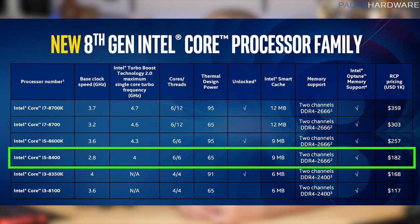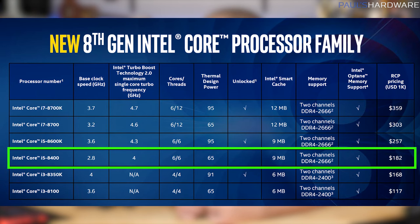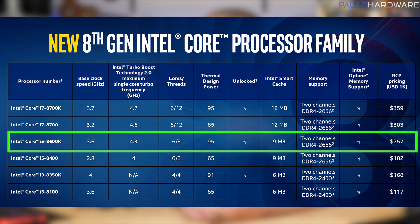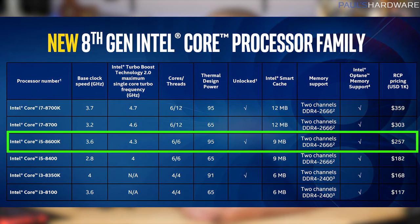Next is the i5-8400 that I'll be testing today: 2.8GHz base and a 4GHz boost, 6 cores and 6 threads, 65W TDP, and $182 retail pricing, so I'm expecting this one to be around $200. The i5-8600K is the unlocked 6-core chip with no hyper-threading, so 6 cores and 6 threads, 95W TDP. I'm expecting this to be a popular chip at a bulk price of $257.